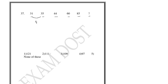35 minus 31 is 4, 44 minus 35 is 9, 60 minus 44 is 16, and 85 minus 60 is 25.